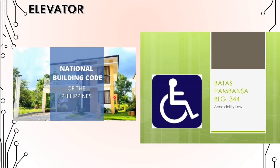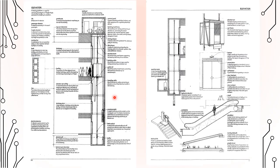Another provision in the building code allows only a maximum of four elevators per battery in one shaft. So if the design requires five units, you place one separately, because the maximum allowed is four rows of elevators per shaft.